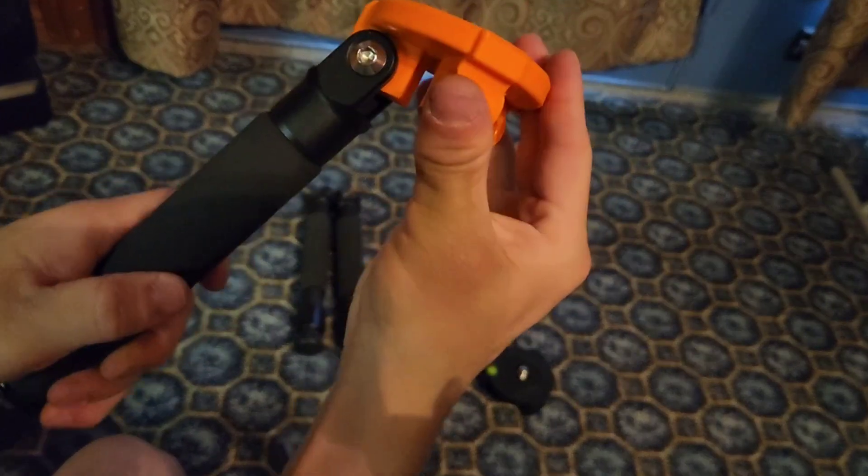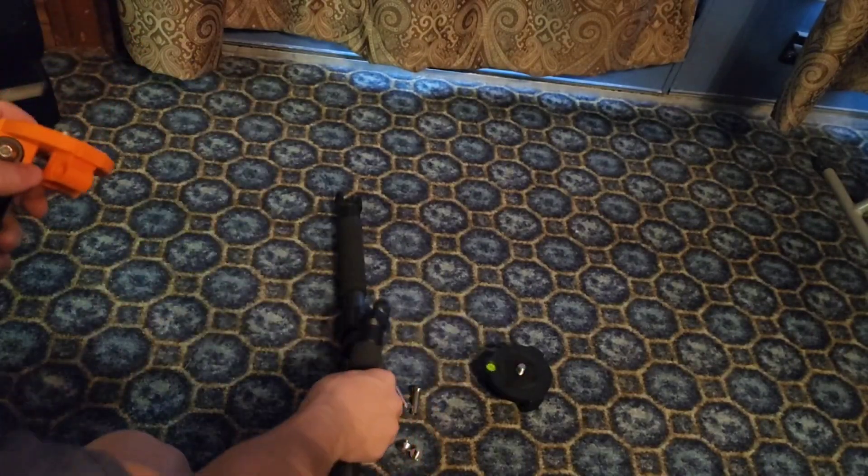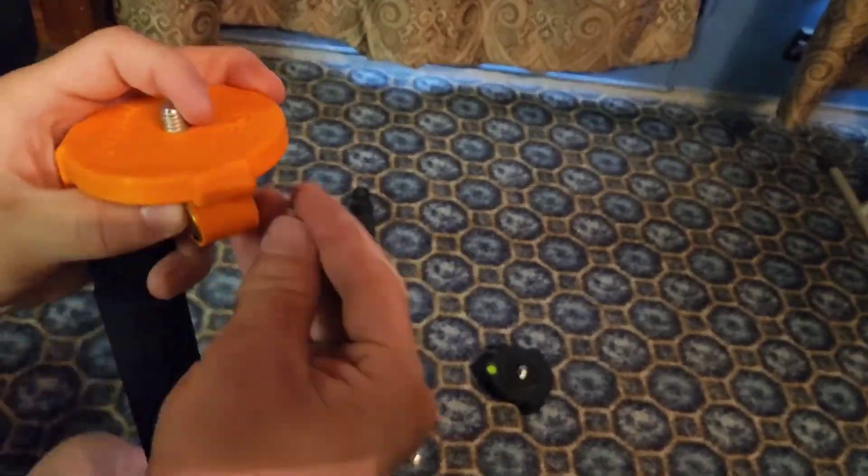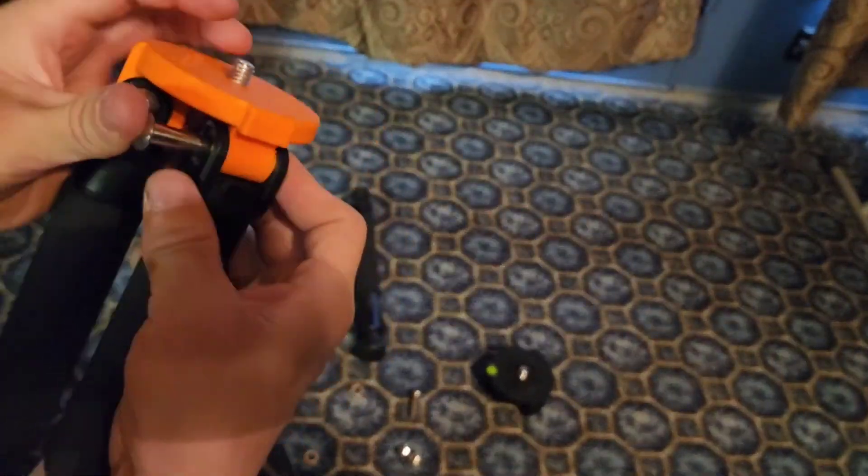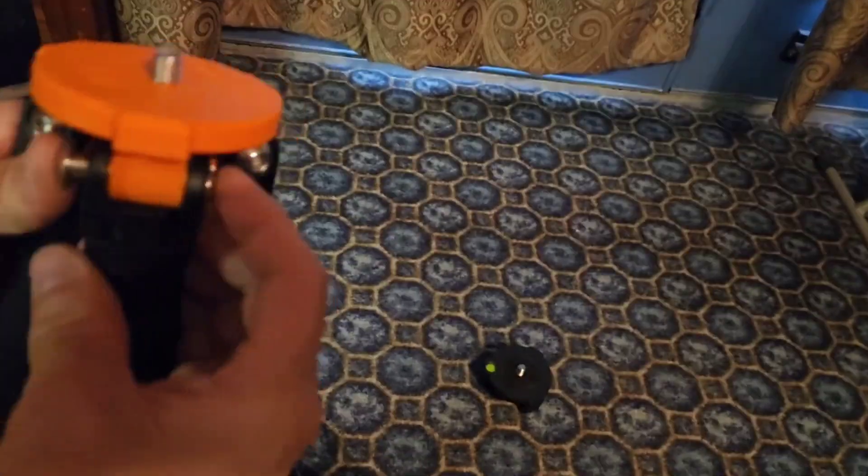Bend the leg and ensure that it folds flush with the top of the EQ adapter. Repeat this process with the other two legs. Two legs should swivel 90 degrees and the other should swivel about 20 degrees.